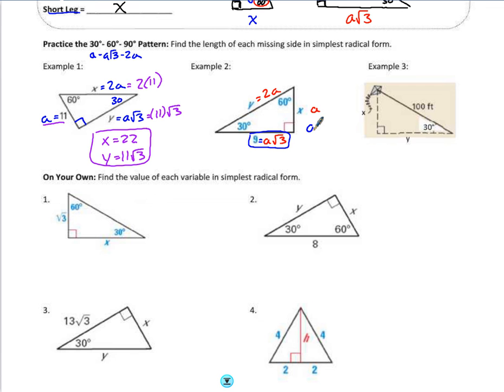9 is equal to a root 3. So to solve for a, I'm going to go ahead and divide by the square root of 3. And then I'm going to rationalize to get my square root out of the denominator. When I do that, I end up with a value that is equal to 9 root 3 all over 3. And 9 divided by 3 can be simplified to just 3.